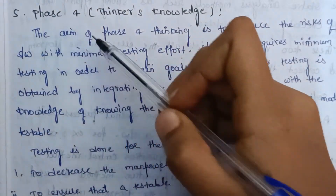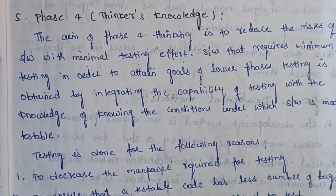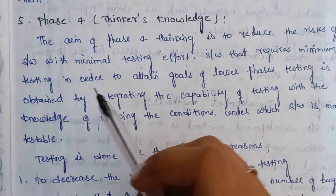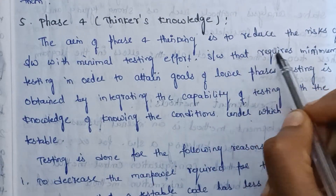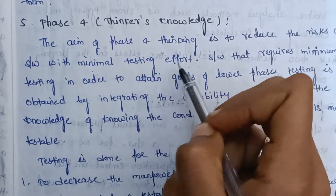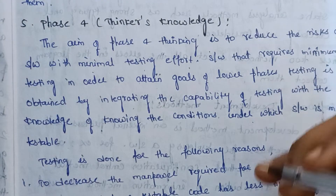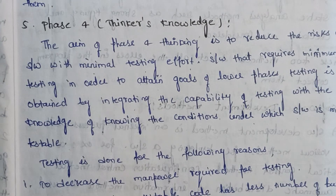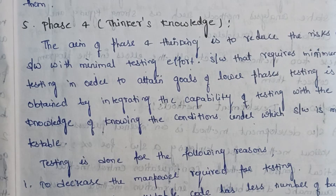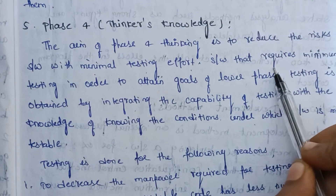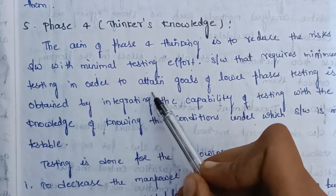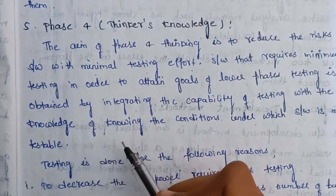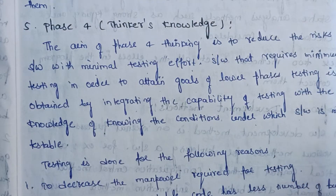Phase 4: we call it Thinker's Knowledge. The aim of Phase 4 thinking is to reduce the risk of software with minimal testing effects. Thinkers are allowed to reduce the risk of software with minimal testing effects. Software requires minimum testing in order to attain the goals of lower phases. Testing is obtained by integrating the capability of testing with the knowledge of conditions under which software is more testable.